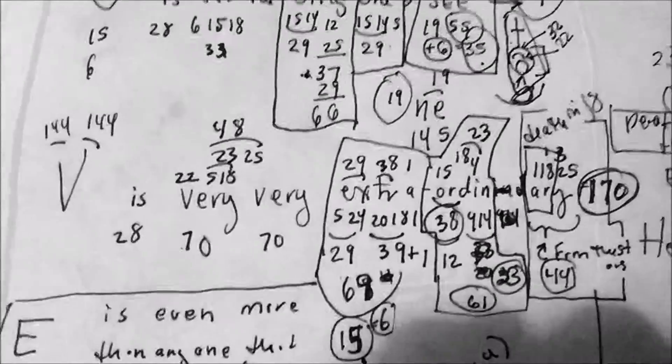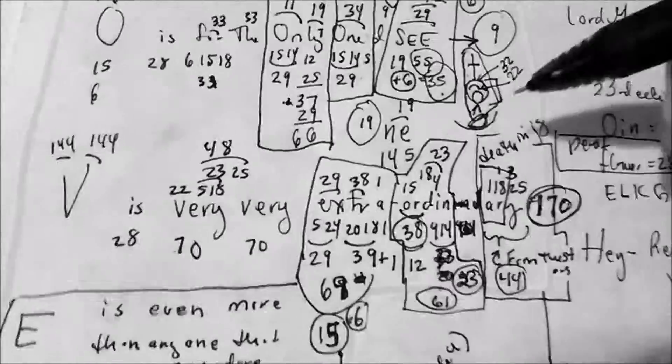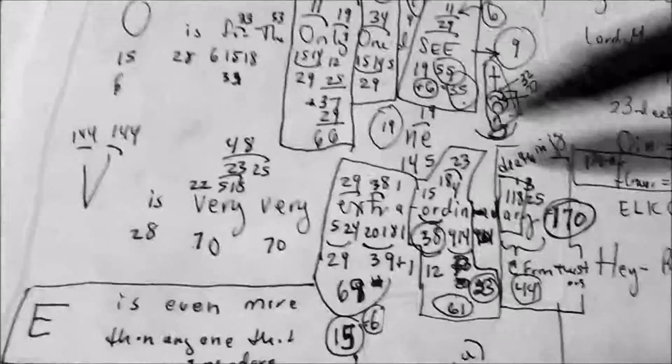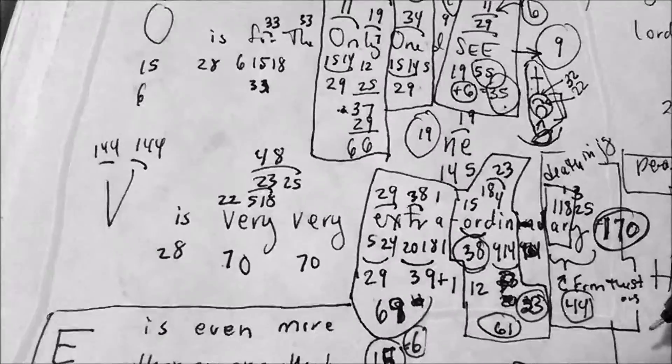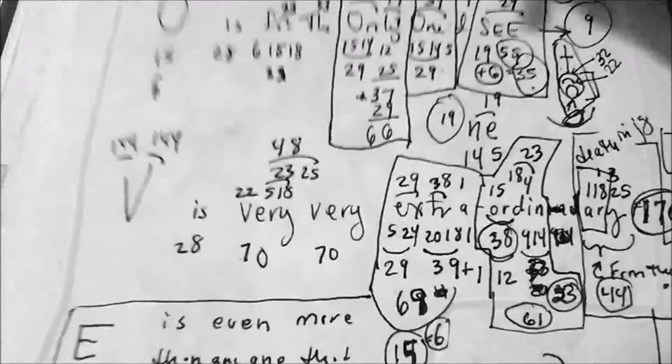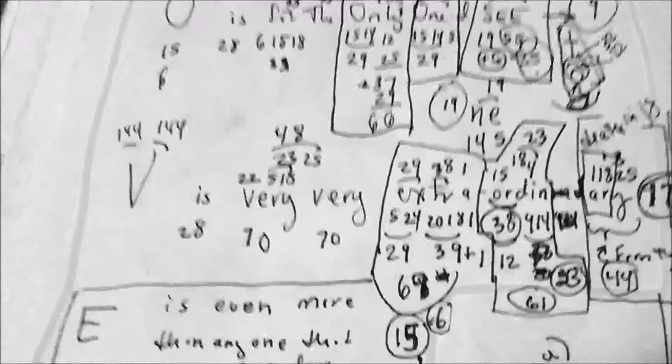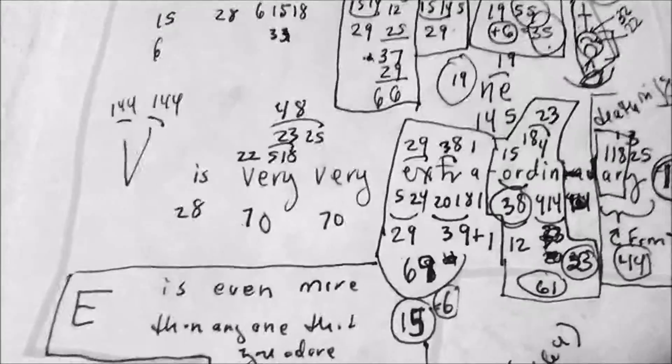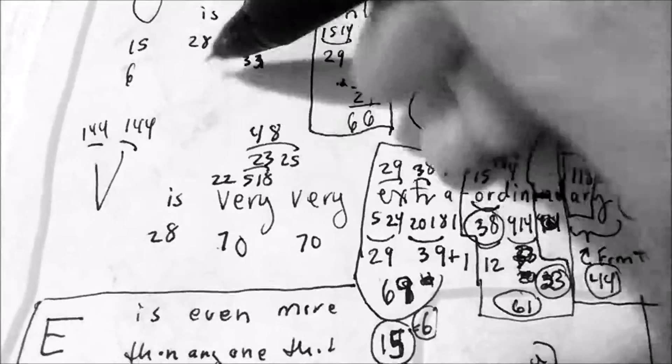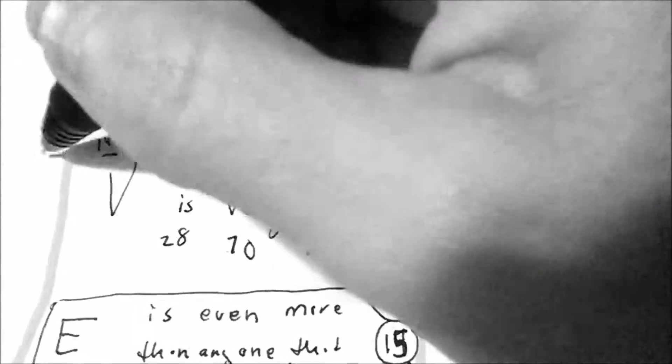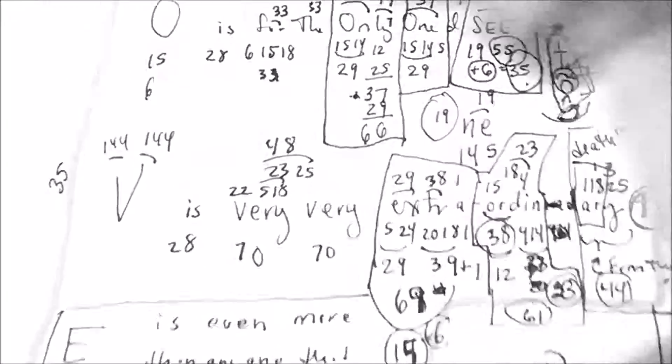Here we are back with part two of 'L is for the way you look at me' by Nat King Cole. Please see part one. I don't think I went over Nat King Cole's numbers again because I did this before in another video. Nat King Cole has a 35, and then he has the word 'king.' Nat is 35, which is the i, which is what I was talking about in the last video.